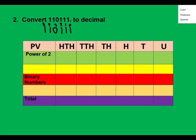For the powers of two, how many numbers do we have in total? One, two, three, four, five, six. So I'm going to write six twos. I'll put the powers on them: zero, one, two, three, four, and five. Two to the power zero gives one, two, four, eight, 16, and 32.